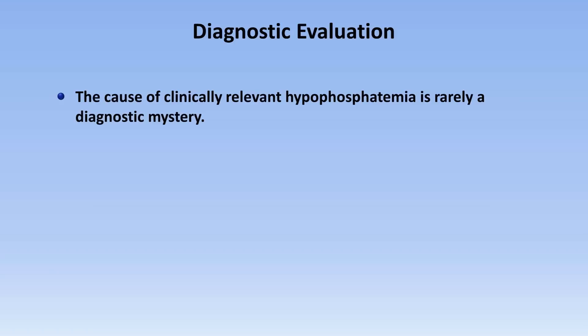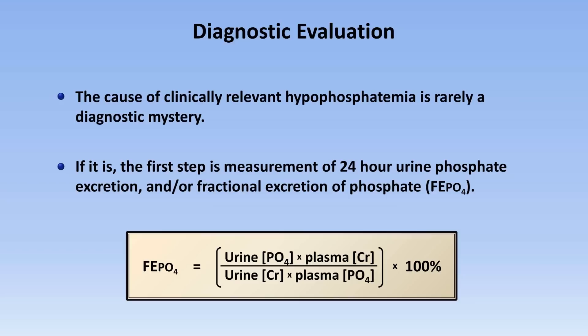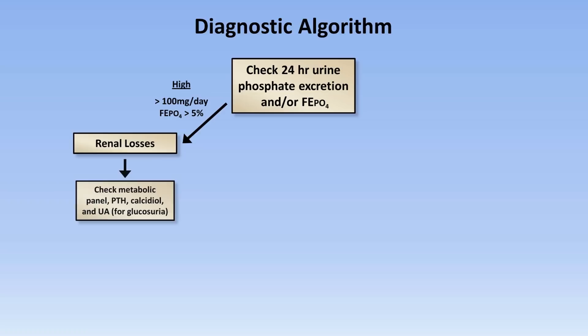Moving on to the diagnostic evaluation, as with hyperphosphatemia, the cause of clinically relevant hypophosphatemia is rarely a diagnostic mystery. If it is, the first step is measurement of 24-hour urine phosphate excretion and/or fractional excretion of phosphate. The equation for this is analogous to that for the fractional excretion of sodium. If either the 24-hour urine excretion is high, that is above 100 mg per day, or the fractional excretion is above 5%, it is consistent with renal losses of phosphate.